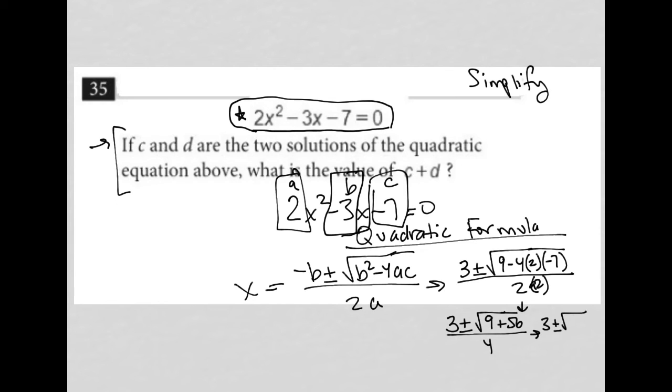3 plus minus square root 9 plus 56 is 65 all over 4. So C would equal 3 plus root 65 over 4. And let's call that C. And D would equal 3 minus root 65 all over 4.